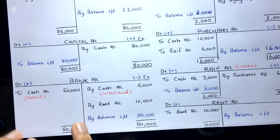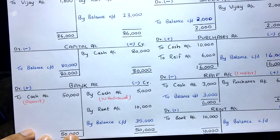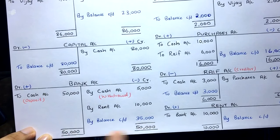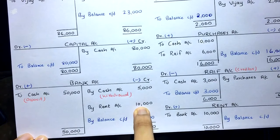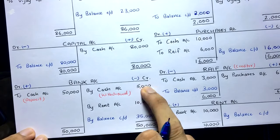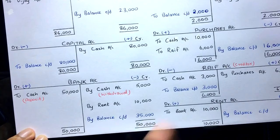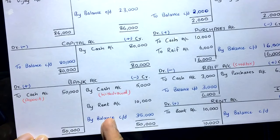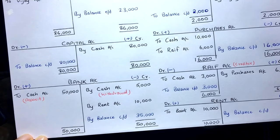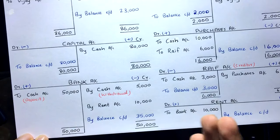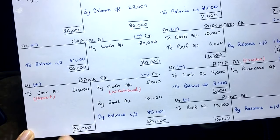For the Bank Account: debit side is 50,000, credit side is 5,000 + 10,000 = 15,000. Debit side is bigger, so write 50,000 on both sides. Balance: 50,000 − 15,000 = 35,000, carried down. This means you have 35,000 in your bank account. In the next period this will go to the debit side as 'balance brought down.'